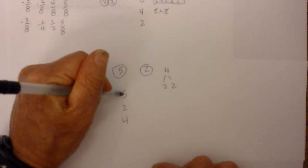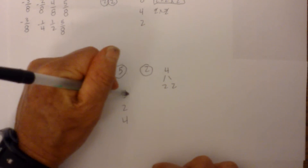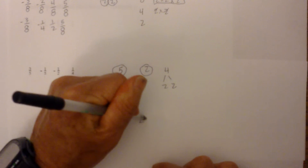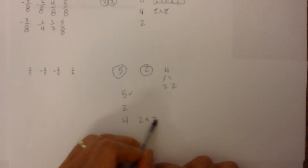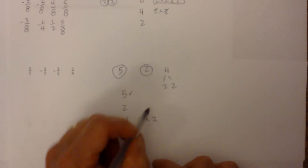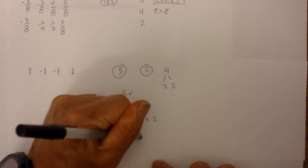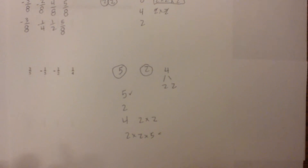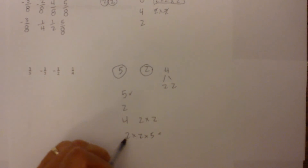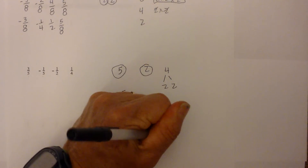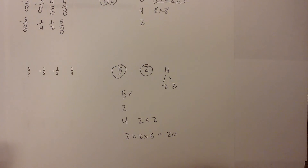There's only one five prime number, so we're going to use five. Four has the greatest amount of twos, so we use two times two. The common denominator will be two times two times five. Two times two is four, and four times five is twenty — so twenty is our common denominator.